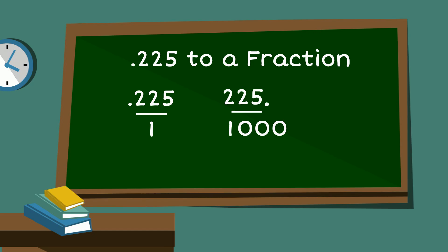Now we can reduce this fraction. 225 and 1,000 are both divisible by 25. So 25 goes into 225 nine times, and 25 goes into 1,000 forty times.